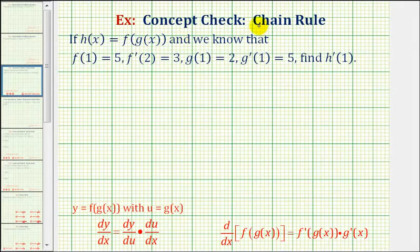The basic idea of the chain rule is to find the derivative of a composite function, we find the derivative of the outer function, and then multiply by the derivative of the inner function.